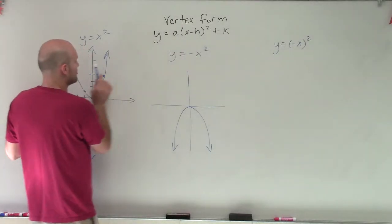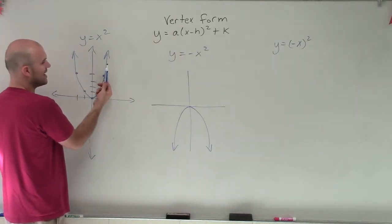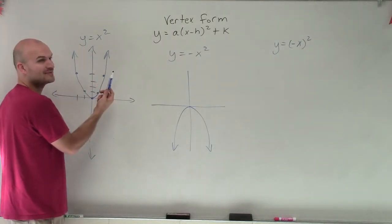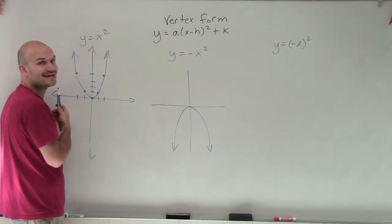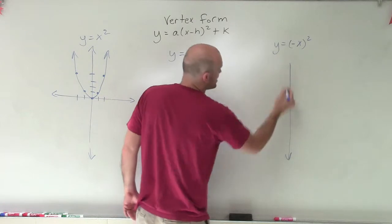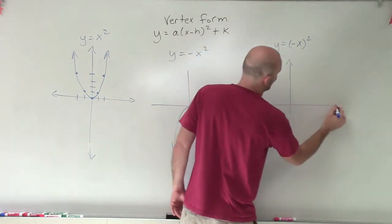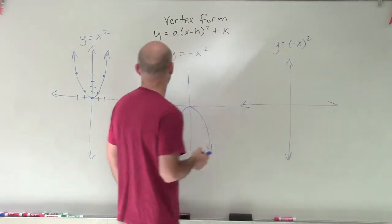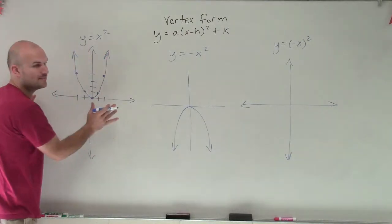So if I was to take this graph and reflect it over the y-axis, over my axis of symmetry, I'm going to get the exact same graph. So by applying my transformation, which is a reflection over the y-axis, I'm going to actually have the exact same graph of my parent graph.